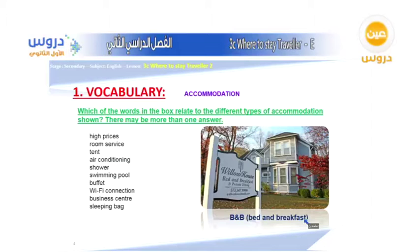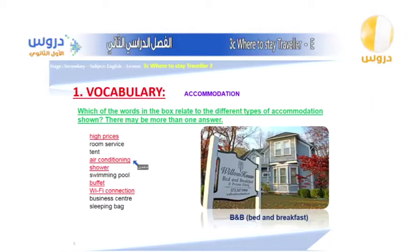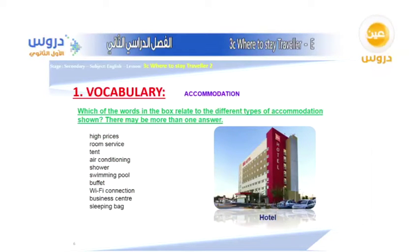If you reserve a room, the receptionist will ask you about bed and breakfast or just bed, as there is a difference in price. The next picture relates to high prices — vocabulary includes air conditioning, shower, buffet, and Wi-Fi connection. Moving to hotel: related words include high prices, room service, air conditioning, shower, swimming pool, buffet, Wi-Fi, and business center.